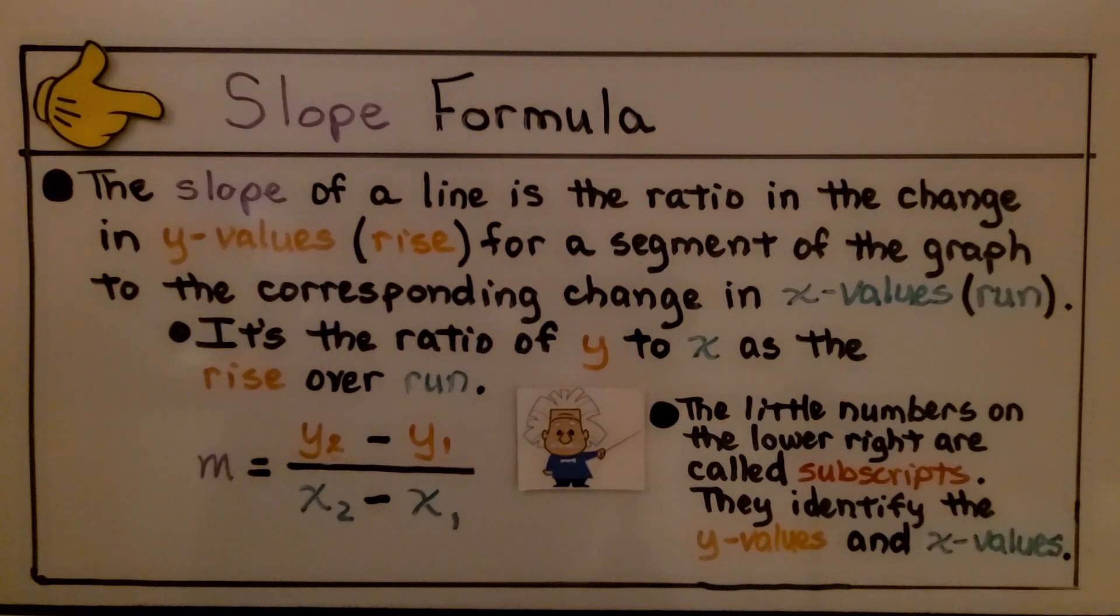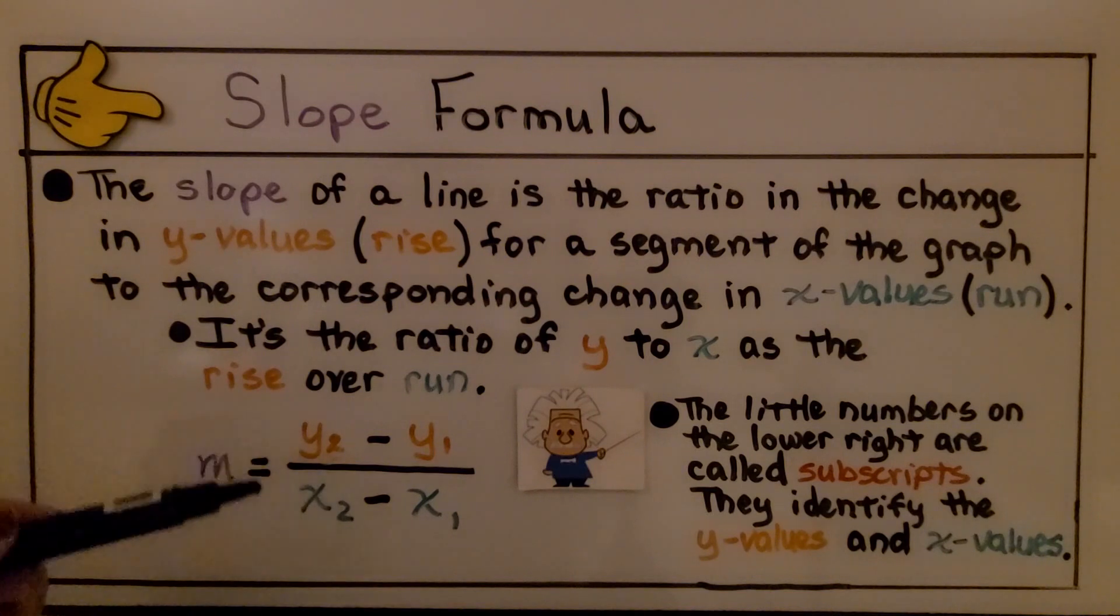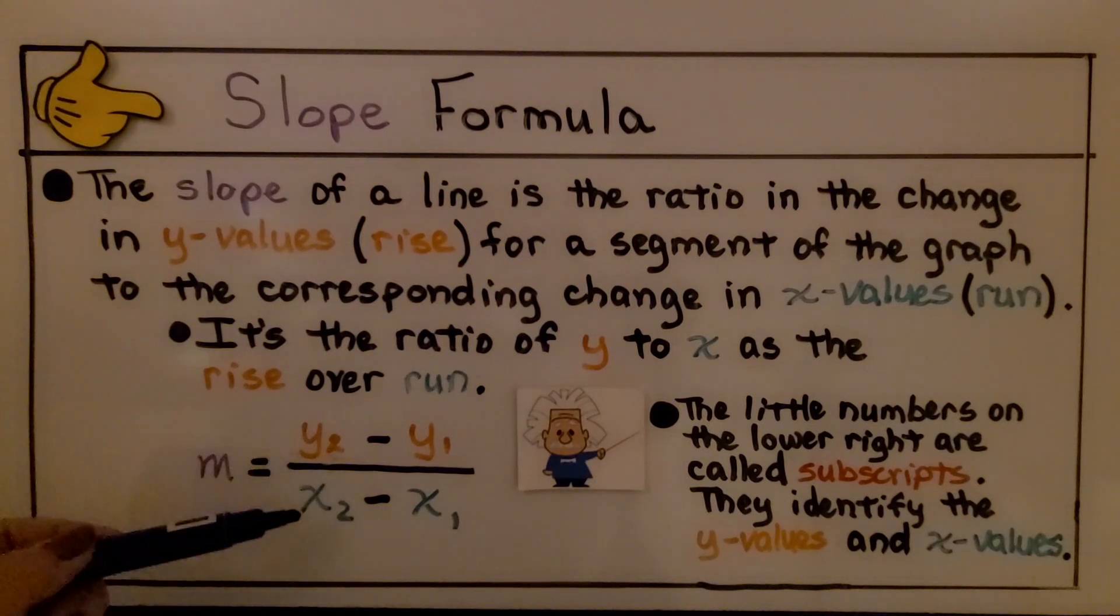This is the slope formula. The slope of a line is the ratio in the change in y values, rise, for a segment of the graph to the corresponding change in the x values, the run. It's the ratio of y to x as the rise over the run.